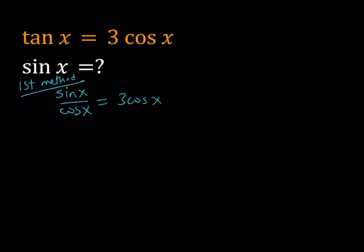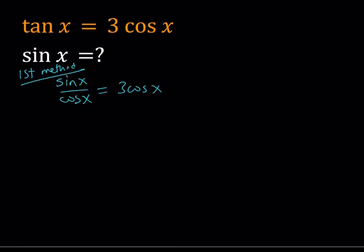And then using cross multiplication. Obviously we have to be careful about not making this undefined. So cosine x should not equal 0. And obviously if cosine x is equal to 0, this will not be satisfied because tangent and cosine can't be 0 at the same time. So from here we get sine x equals 3 cosine squared x.